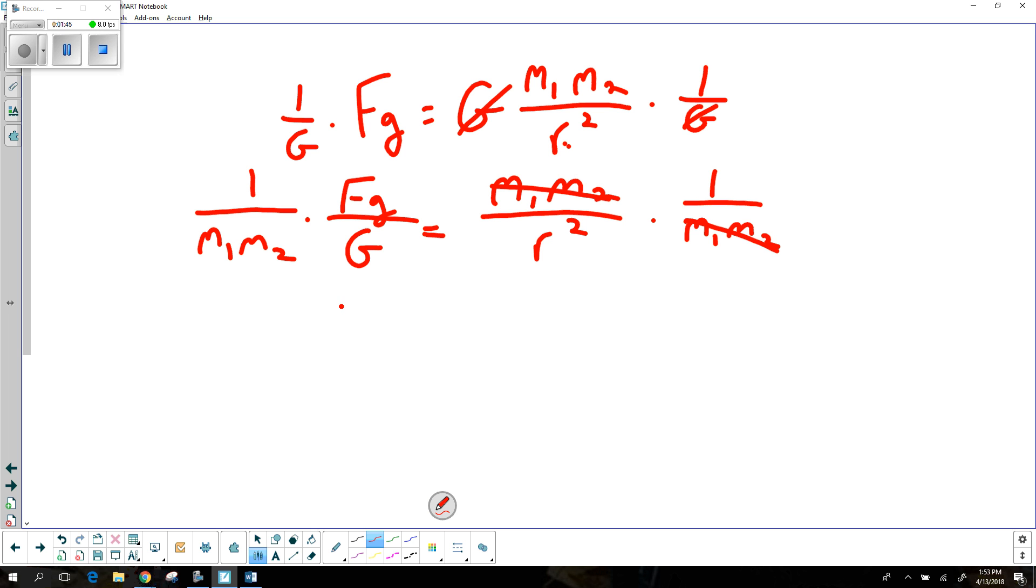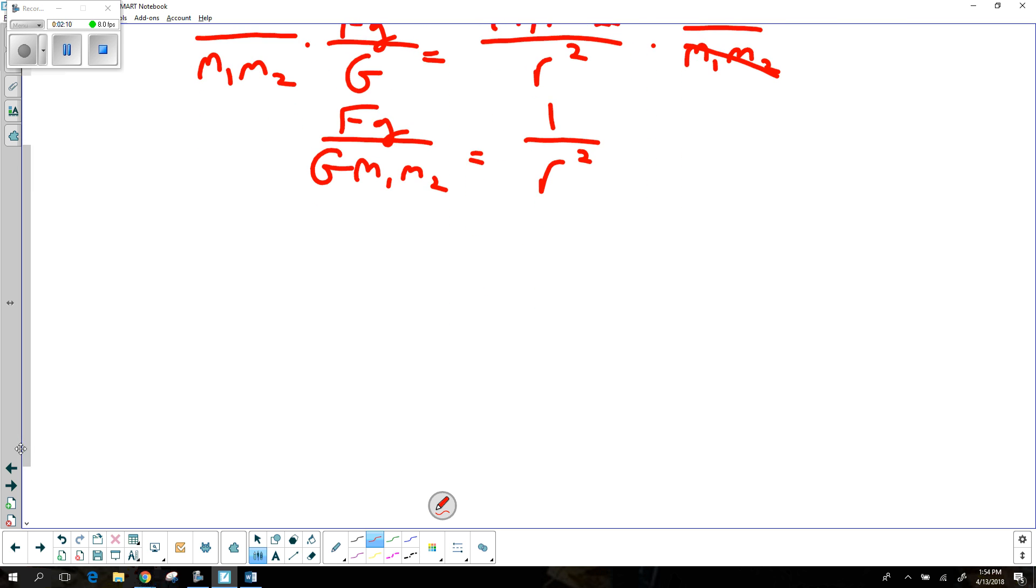So the trick is here, I'll end up with F over G times m1 times m2 equals 1 over r squared. So there's one additional step here. How would I get it to regular r as opposed to 1 over r? Can't I just work both fractions? No.